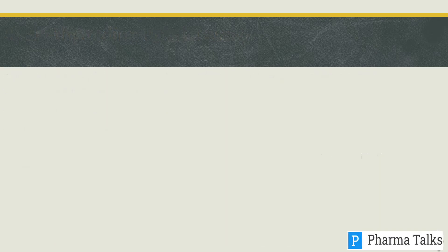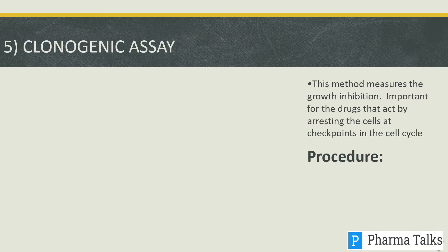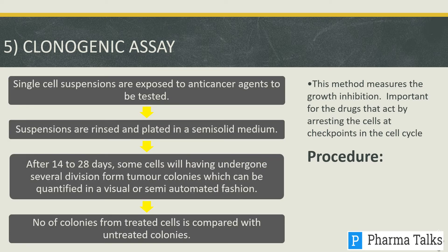The clonogenic assay measures growth inhibition and is important for drugs that arrest cells at checkpoints in the cell cycle. In the procedure, single cell suspensions are exposed to anti-cancer agents, then rinsed and plated in a semi-solid medium. After 14 to 28 days, cells that have undergone several divisions form tumor colonies, which can be quantified visually and compared.